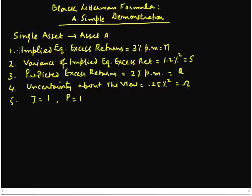Hello everyone. In the last video we discussed the Black-Litterman formula. Now let us use it for a simple case where we have just one asset. For this video, let us assume a single asset, and we have given it a name here: asset A.